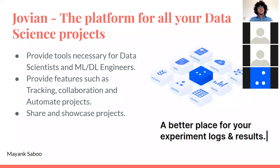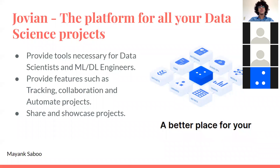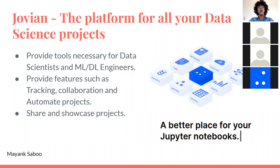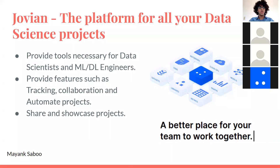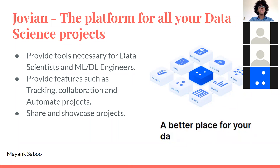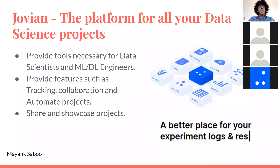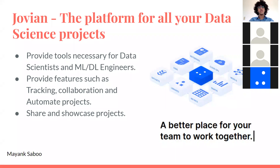So what exactly is Jovian? It's a platform for data science projects that provides features such as tracking, collaborating with different people on different projects, and also automating your projects. It also gives you a unique ability to monitor hyper parameters of machine learning algorithms. It's not only a great tool for machine learning and data science engineers, but also for students, as we get a unique ability to share and showcase our projects.